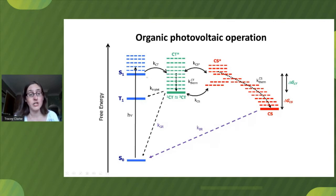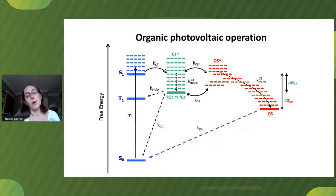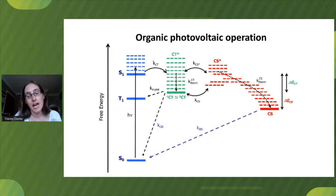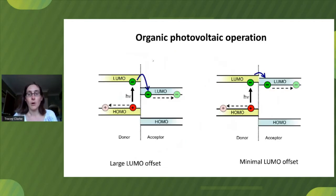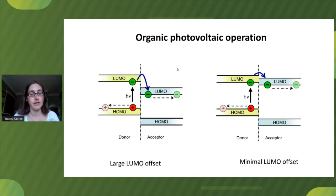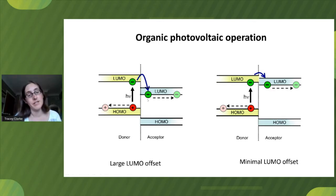In the conventional picture, there is quite a large energy gap between our S1 state and our charge transfer state. But our most efficient non-fullerene acceptors operate with a much smaller energy gap between the S1 and the charge transfer state. Moving from the state picture to an energy level picture, the conventional view on the left shows a large LUMO offset, where we have a large driving force for charge separation, which has often been linked with higher levels of charge generation.